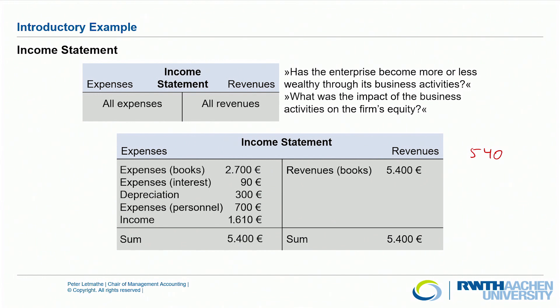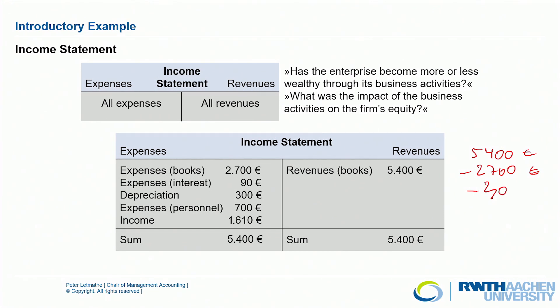Calculating the income: revenues are 5,400 euros minus expenses of 2,700 minus 300 minus 90 minus 700, giving an income of 1,610 euros. Placing income on the left side, both sides of the income statement sum to 5,400 euros. Note that if expenses exceed revenues, a loss occurs and the loss figure would appear on the right side. Importantly, we never have negative numbers in financial reports.